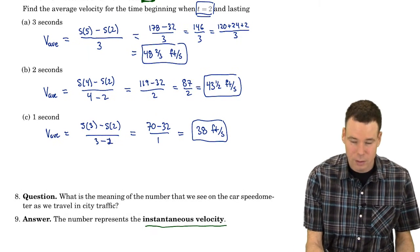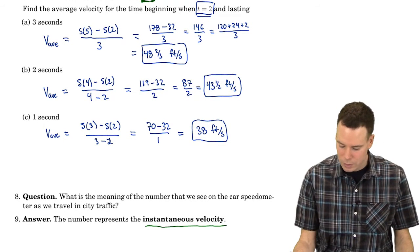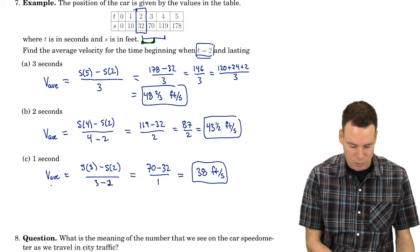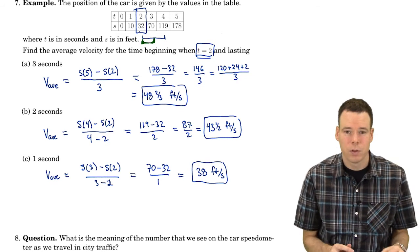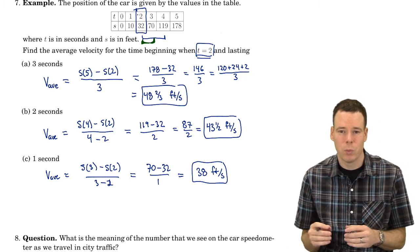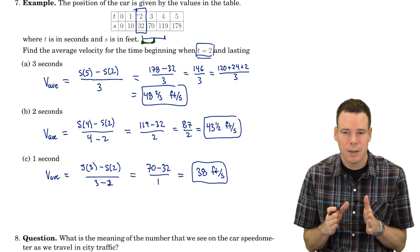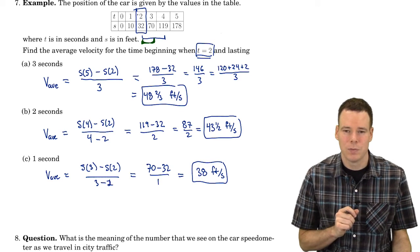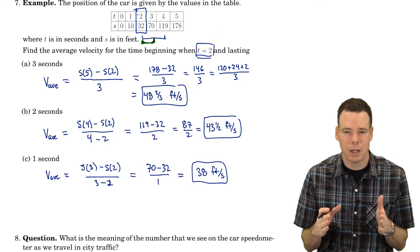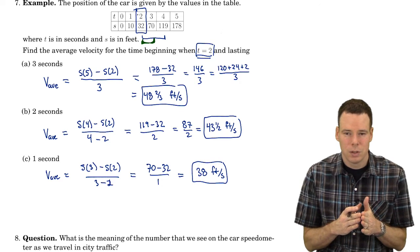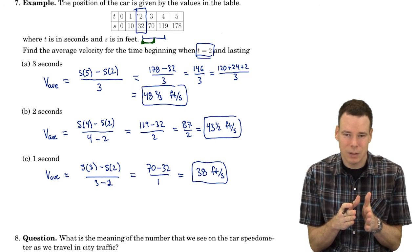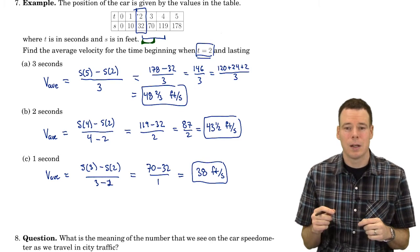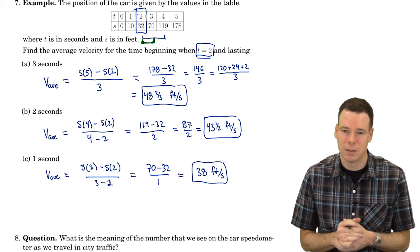So how do we get an instantaneous velocity? The idea is to look at average velocities over shorter and shorter intervals. If I look over a fraction of a second, from time 2 to maybe time 2.1, that gives me a better idea of how fast I'm traveling right at that moment of 2 seconds. If I keep shrinking the time interval closer and closer to 2 and compute average velocity over each tiny interval, I get a value very close to my instantaneous velocity.